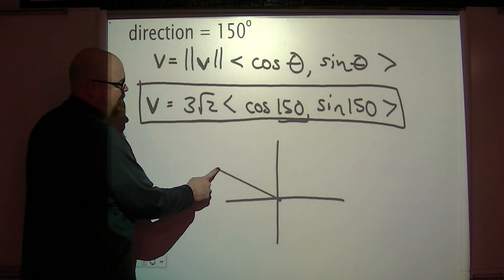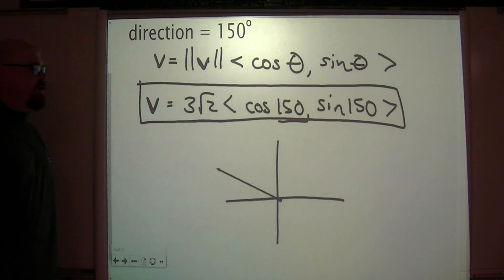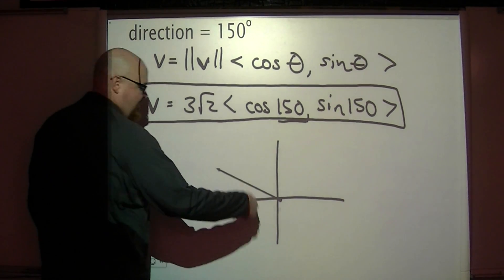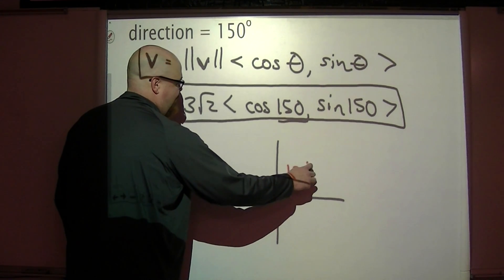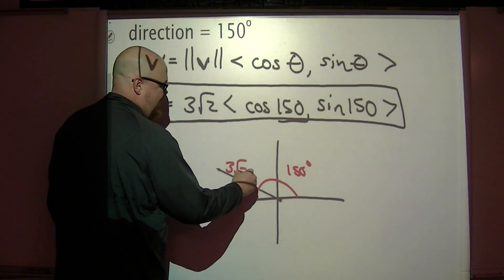We'll talk more about that in a little bit, but if we just put this here at three radical two, this would be where the vector is. We talk 150 degrees from here, and then this distance is three radical two.